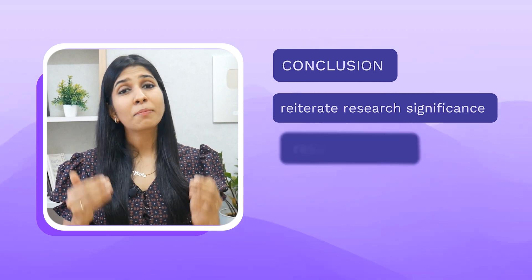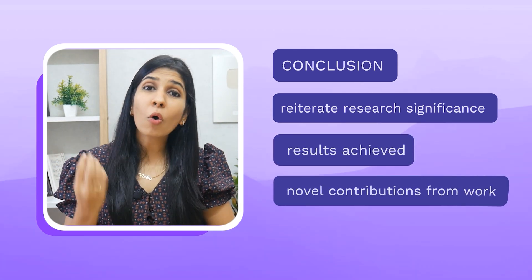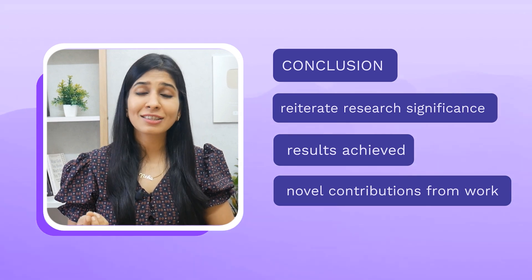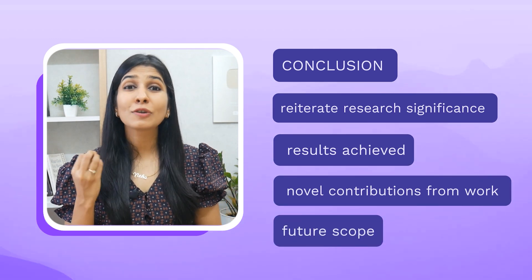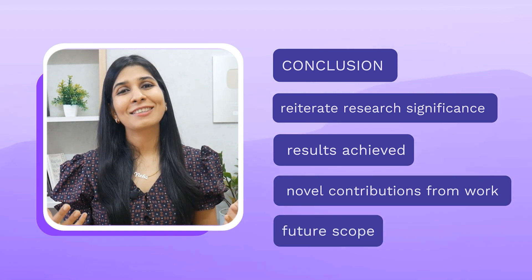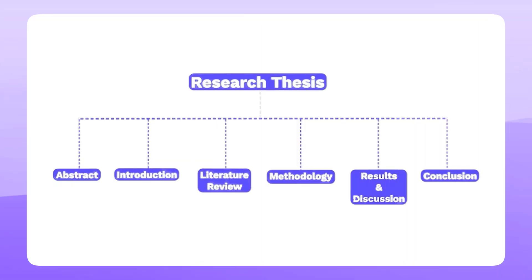Finally comes the last chapter of your research thesis: the conclusion. This is where you reiterate why you took up this research study, what the important results were, what your novel contributions are or how your research made an impact in the field, and the future scope — how your research study can be taken forward by other researchers. By writing all these sections, you will have managed to write your research thesis or dissertation.